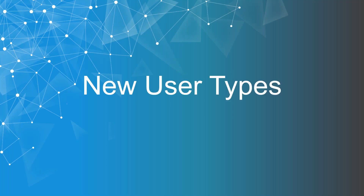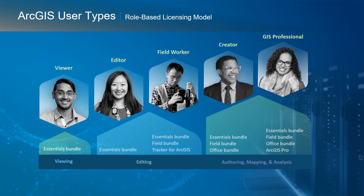With these new releases the named user model evolved into what's being called the new user types. Simply put, the new ArcGIS user types are the embodiment of Esri's vision for role-based licensing. The five new user types are designed to map closely with the five most common types of roles seen in organizations that have adopted ArcGIS technology. Each user type includes a set of privileges such as viewing, editing, or creating, as well as a set of application bundles like the field bundle or office bundle.